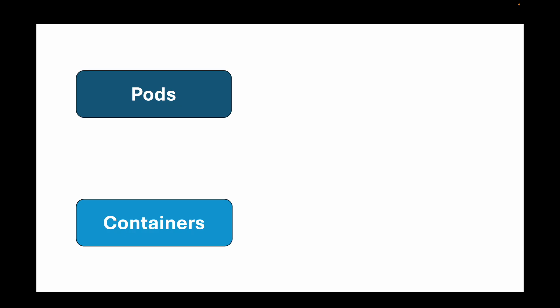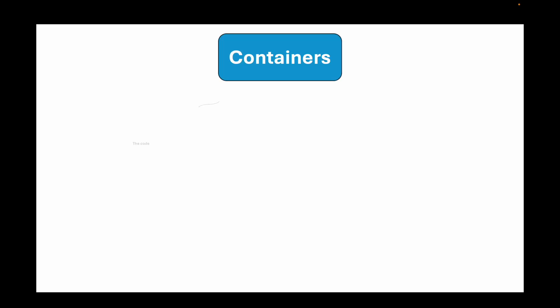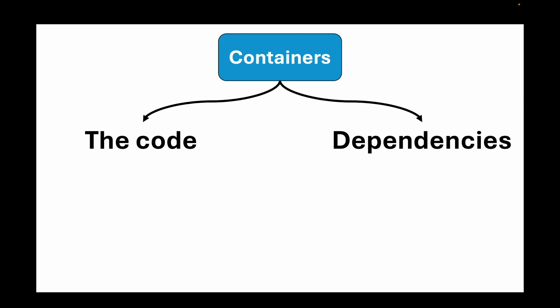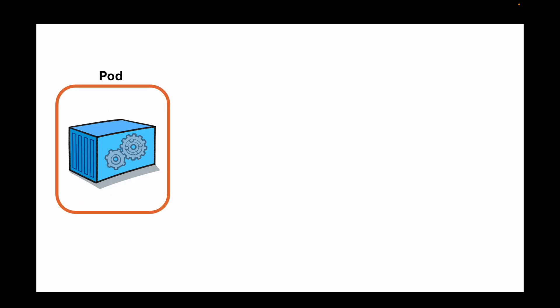When we talk about pods, the terms 'pods' and 'containers' are very often used interchangeably, but they are different things with different purposes. A container contains all the code as well as the package dependencies needed to run our application. Containers are run inside a pod, so whenever we talk about running a container, we always run it inside a pod in Kubernetes. The pod becomes the execution environment for the container.